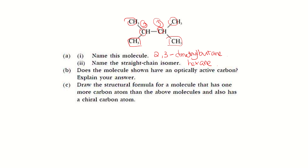Now let's look at part B: does the molecule shown have an optically active carbon? Optically active carbon means a carbon atom — we call it a chiral center — that is attached to 4 different groups of atoms. In this case, we can see we have CH3 and CH, so there's no chiral center, no carbon with 4 different groups. So the answer is definitely no, because there is no chiral center.